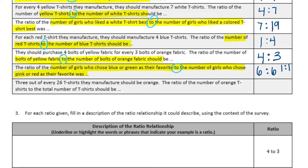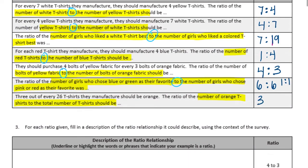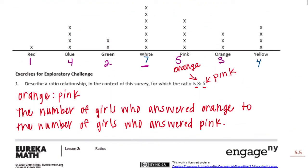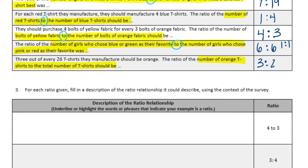3 out of every 26 t-shirts they manufacture should be orange. The ratio of the number of orange t-shirts to the total number of t-shirts. Orange t-shirts is 3. The total number of t-shirts — we know all besides white was 19, so 19 plus 7 for the white gives us 26 total. So we have 3 to 26.